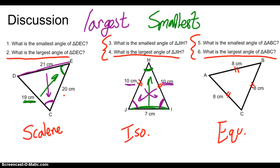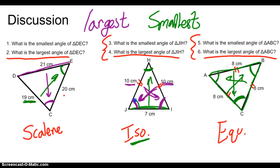In an isosceles triangle, the angles that are opposite the two congruent sides will also be congruent themselves. In an equilateral triangle, every side is the smallest side because they're all congruent, and as a result every angle will be the smallest angle — they're all congruent. So in an isosceles triangle we have two congruent angles, and in an equilateral triangle we have all three congruent angles.